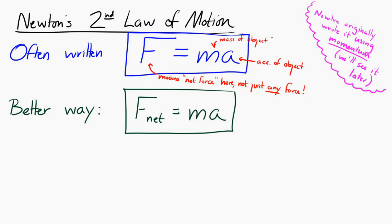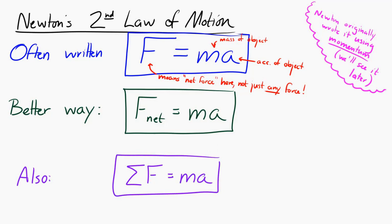An alternate way to write it that makes sense is sigma F equals MA, where the sigma sign represents summation. The sum of all the forces is equal to the mass times the acceleration.